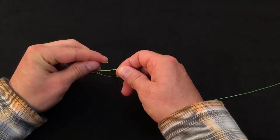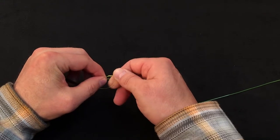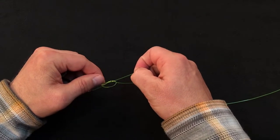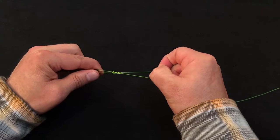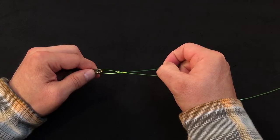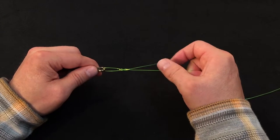Then we're going to double back because we've created another loop from our twist and pass that tag through that loop. That's what's going to lock the tag in and prevent it from slipping.